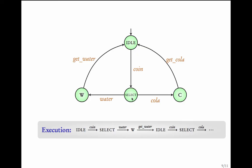For example, Idle, SELECT, W, Idle, SELECT, W, Idle, SELECT, W. This is one execution. The same, Idle, SELECT, COLA and this loop is an execution. So, executions are ways of looking at behaviours of the transition system.